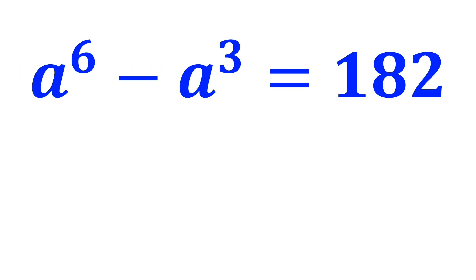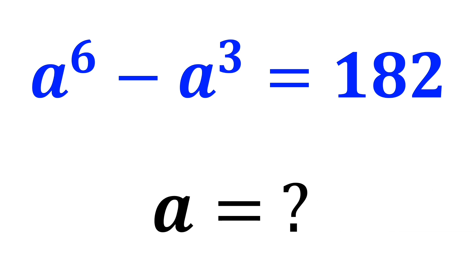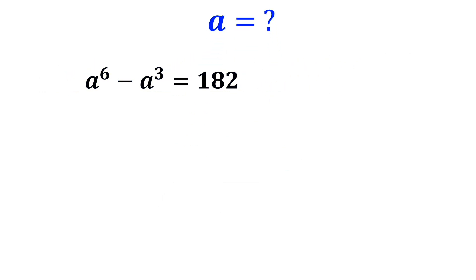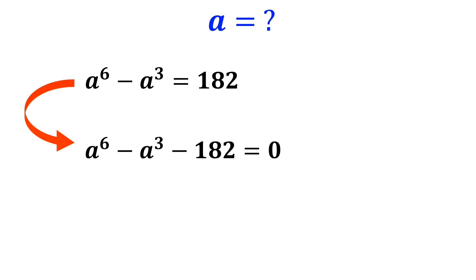If a to the power of 6 minus a cubed equals 182, then what is the value of a? Let's break it down step by step together. First, we write this equation as follows: a to the power of 6 minus a cubed minus 182 is equal to 0.